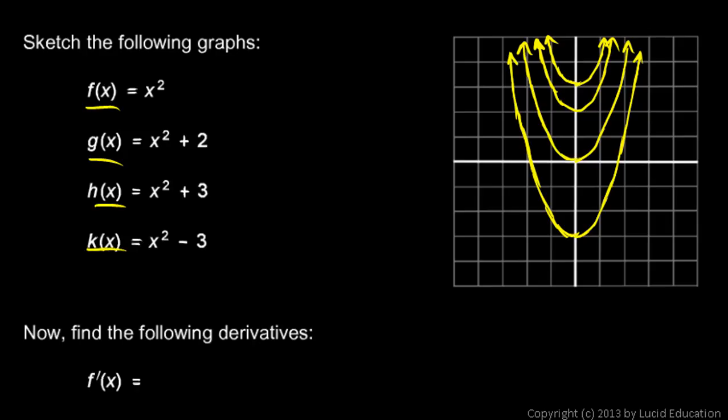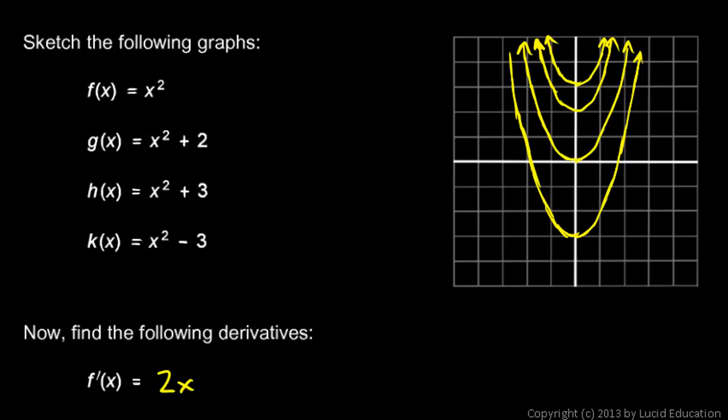f, g, h, and k, we're going to find the derivative. Remember, when we take the derivative of a constant, it's just 0. So f'(x) is just 2x.